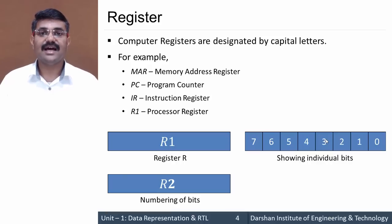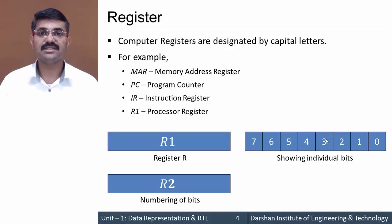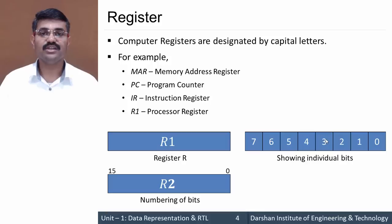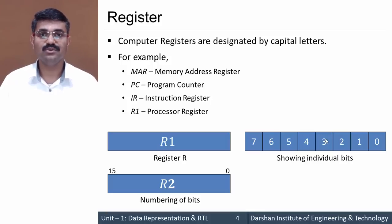Similarly, a register can also be denoted as R2. Instead of showing bits individually, you can note the numbers from right to left — in this case 0 to 15 — indicating that the size of the register is 16 bits.